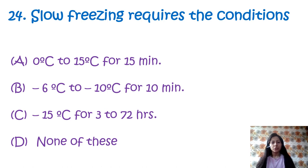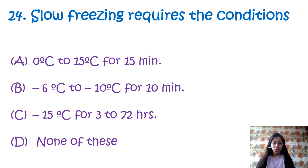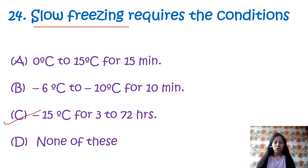Question 24: Slow freezing requires the condition — option A: 0°C to 15°C for 15 minutes, option B: minus 6°C to minus 10°C for 10 minutes, option C: minus 15°C for 3 to 72 hours, option D: none of these. Slow freezing requires minus 15°C for 3 to 72 hours — option number C.